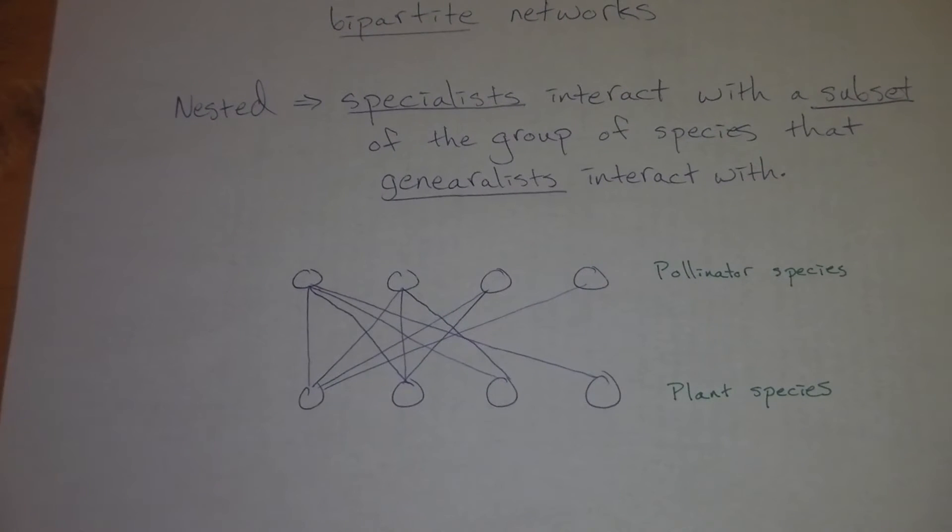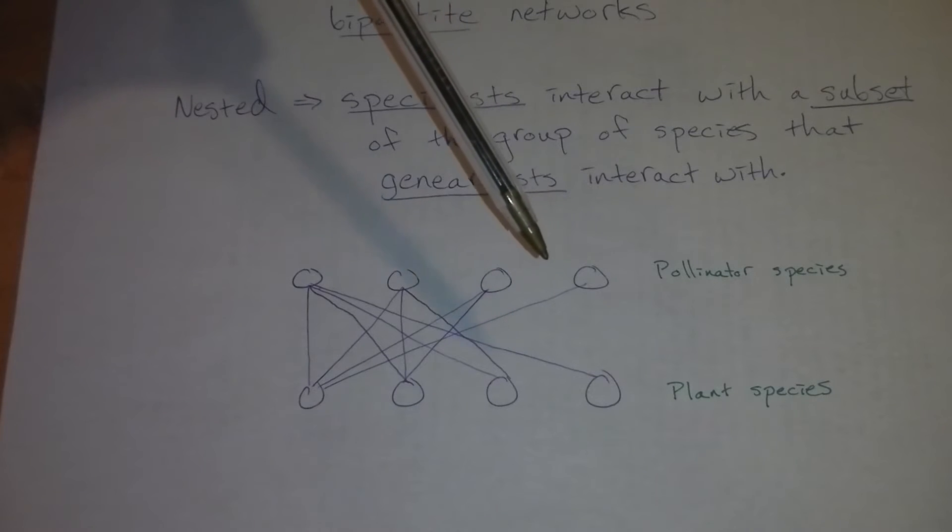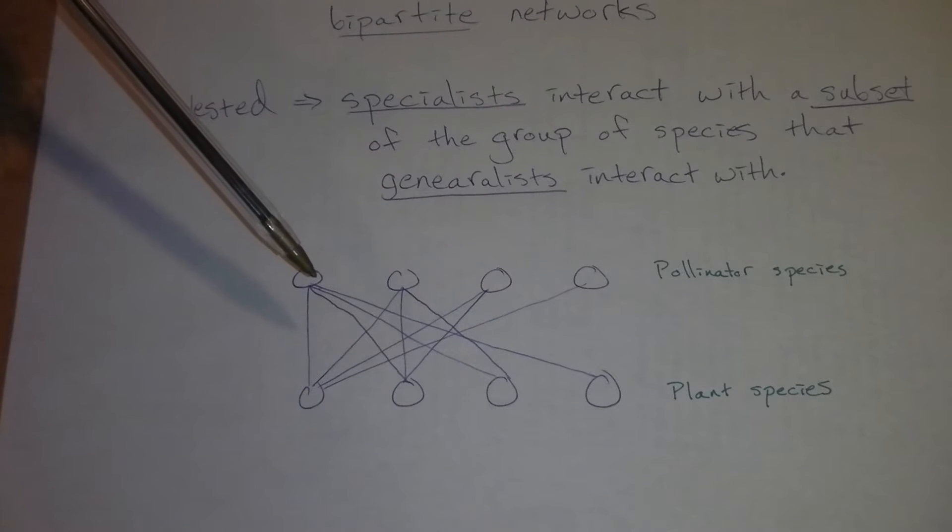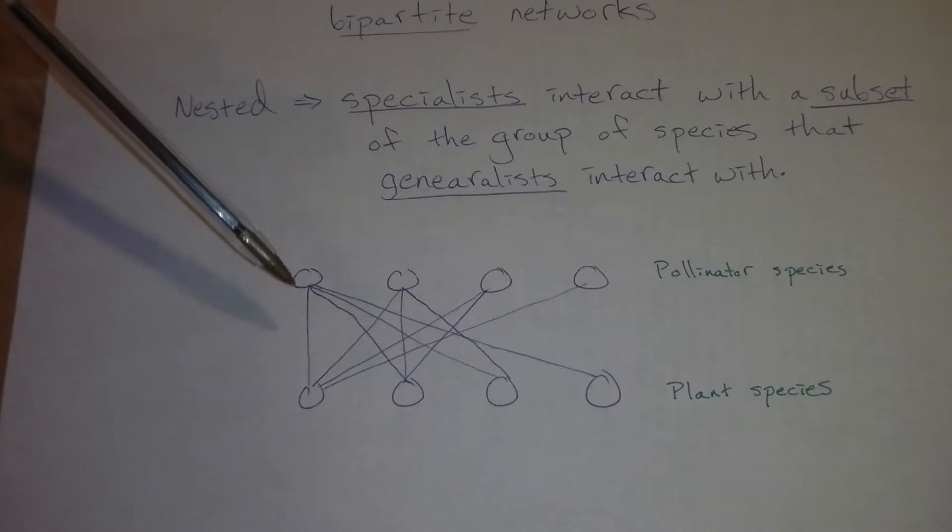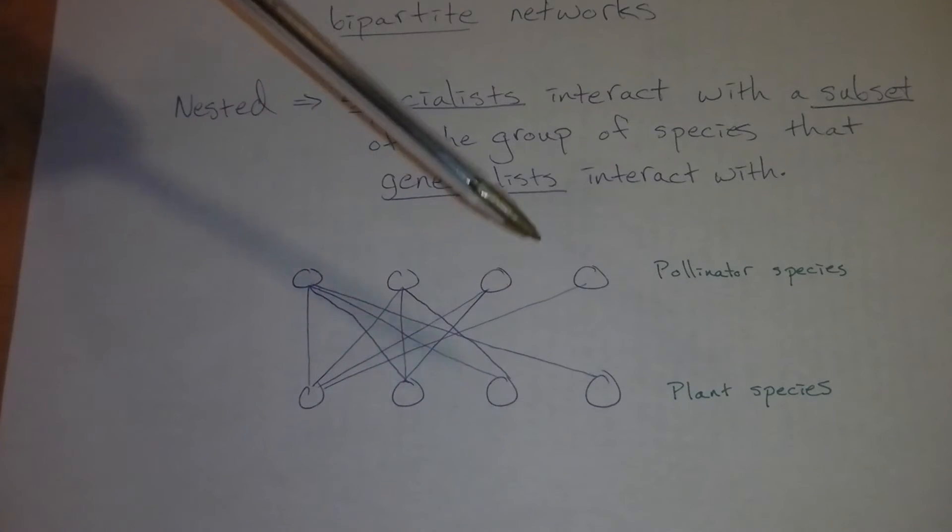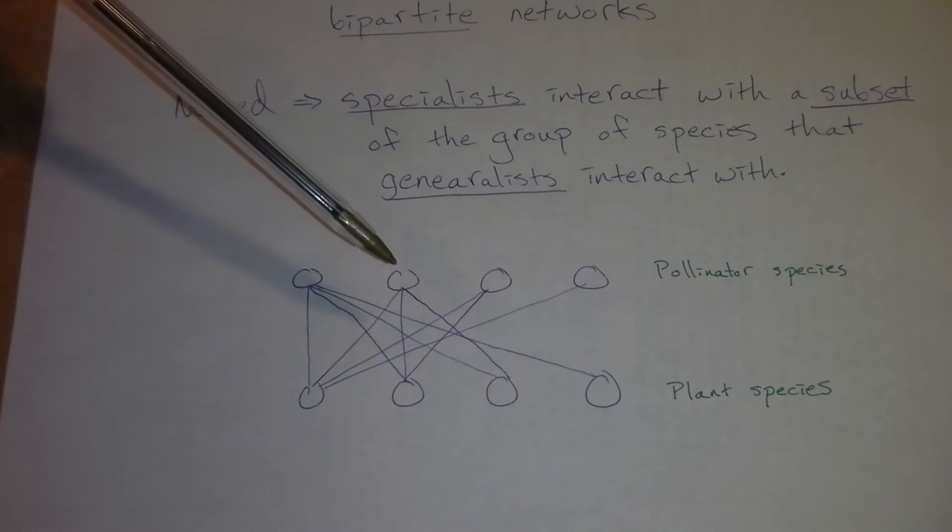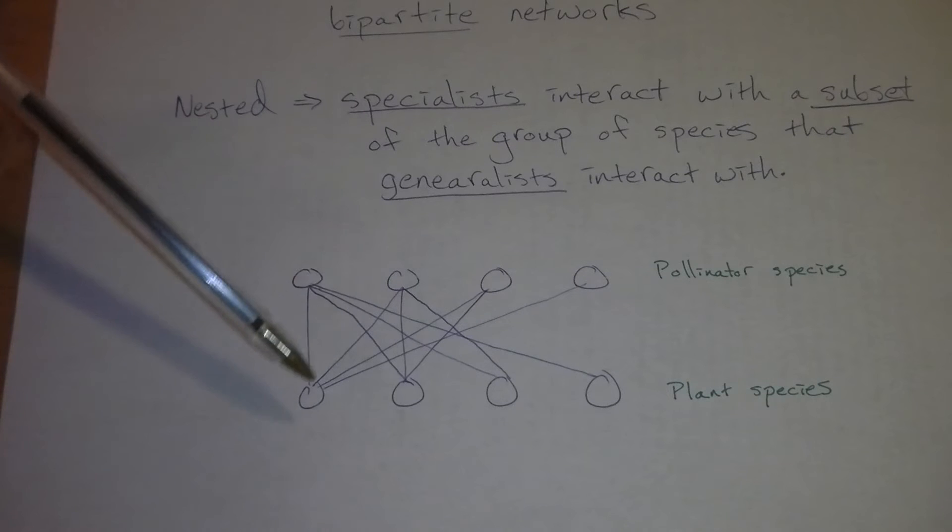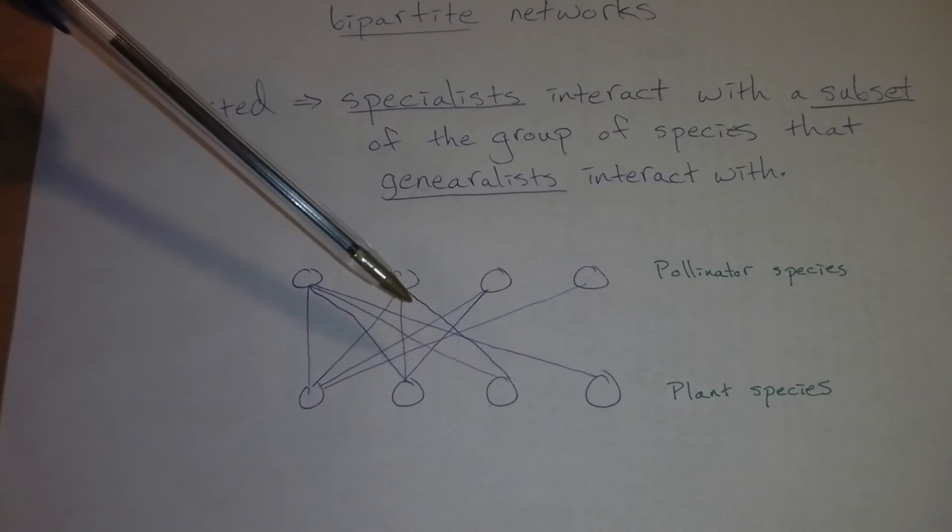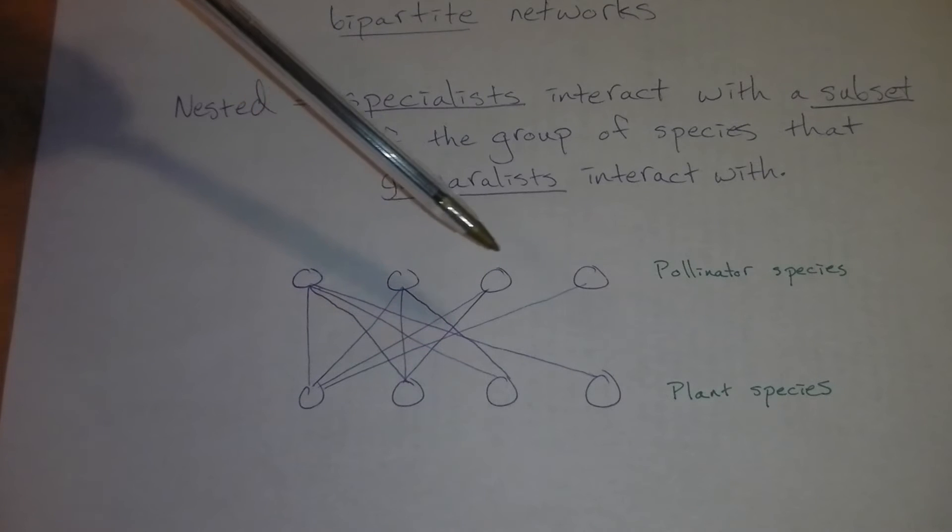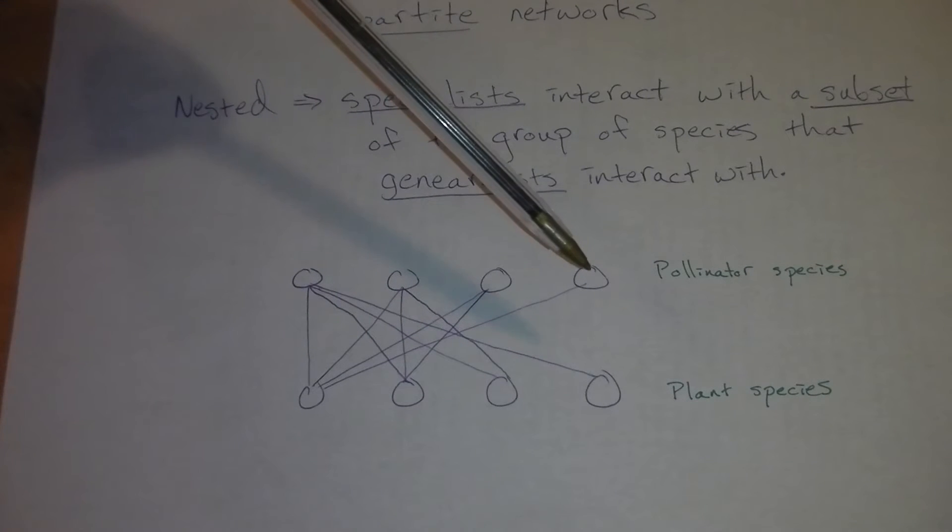So we've got our bipartite network here. We have two different groups: plant species and pollinator species. And so what you'll notice in the structure is that this specialist pollinator species here interacts with a subset of this generalist. You can see this generalist pollinator species interacts with all four plant species. However, let's take this other pollinator, for example. It only interacts with three plant species, so that's a subset of the four. This pollinator species interacts with a subset as well, and so does this one. This most specialized pollinator species interacts with a proper subset.